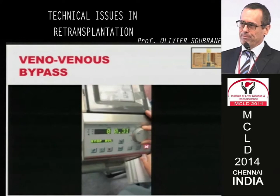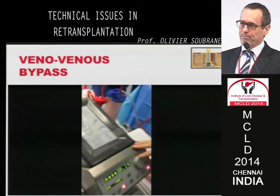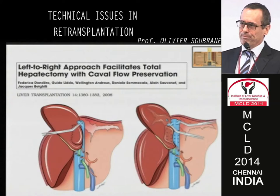The pump starts and you see the blood begin slowly flowing, then you increase the rotation. Another technique to make re-transplantation easier is the left-to-right approach, described by Federica Dondero a few years ago. You can see here the dissection of the left part of the liver, with a temporary porta-caval shunt. This allows control of even the main hepatic veins without torsion of the inferior vena cava, and therefore with less hemodynamic instability.